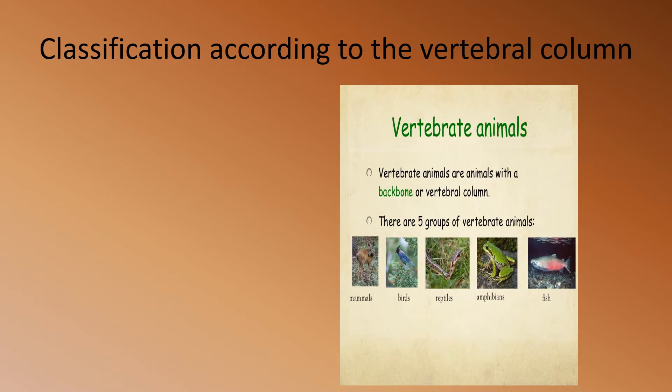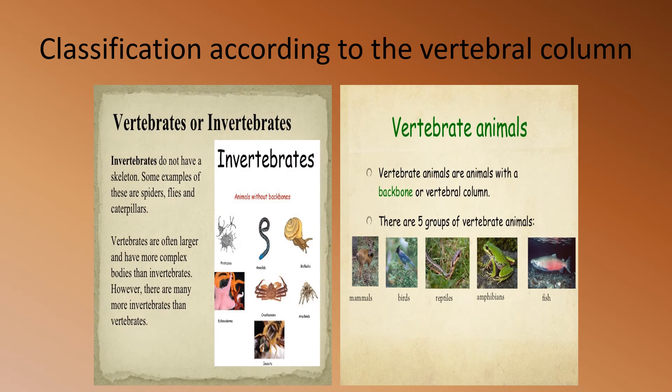Classification according to the vertebral column means classifying animals based on whether they have a backbone. Vertebrate animals are animals with a backbone or vertebral column. There are five groups of vertebrate animals: mammals, birds, reptiles, amphibians, and fish. Invertebrate animals do not have a skeleton. Some examples are spiders, flies, and caterpillars. Vertebrates are often larger and have more complex bodies than invertebrates; however, there are many more invertebrates than vertebrates.